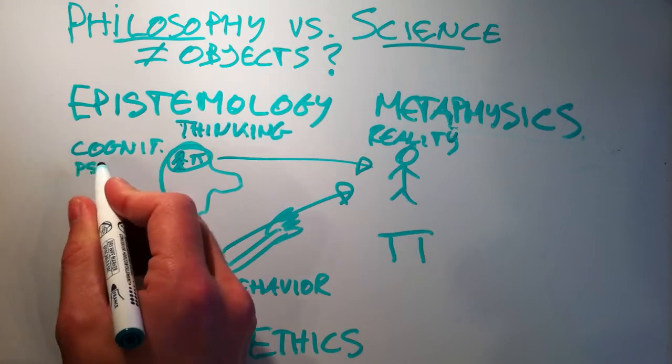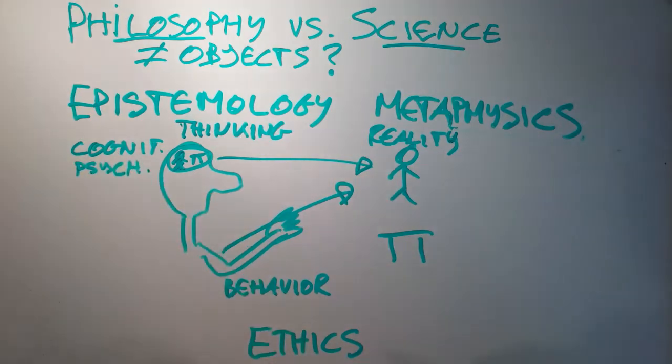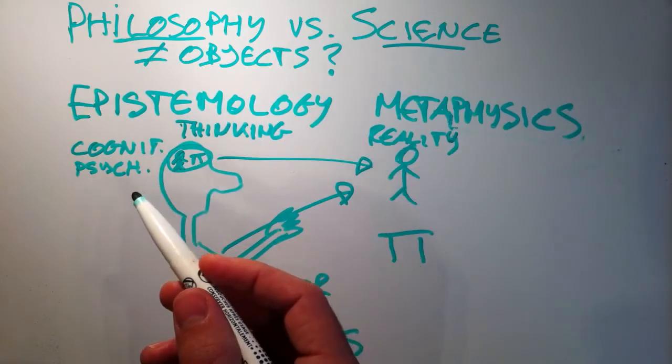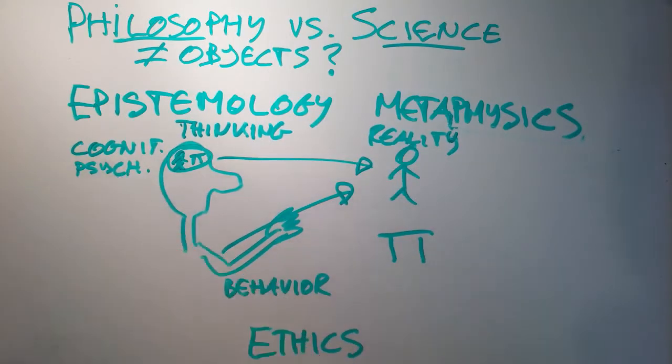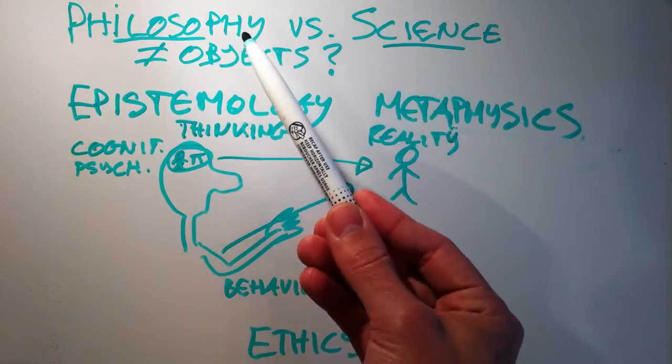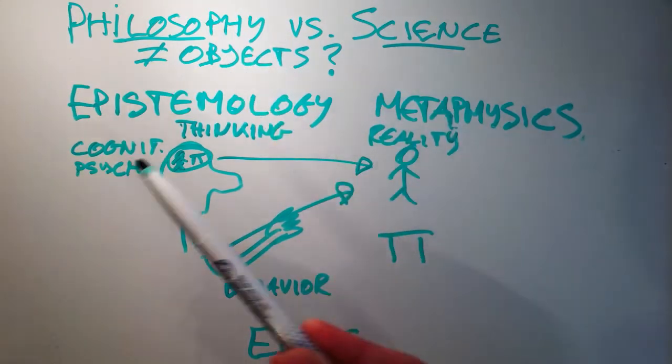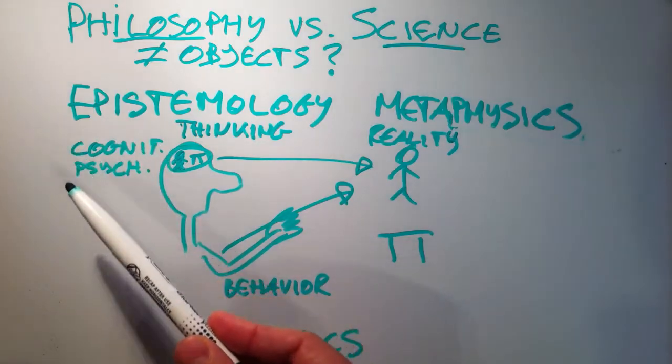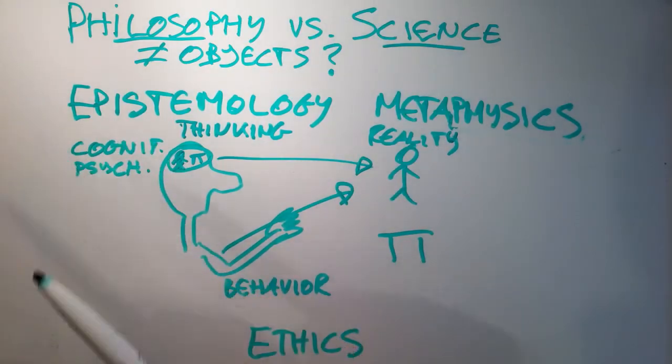So, what is the difference between the philosophical approach here in epistemology and the scientific approach, cognitive psychology? Why do we need this strange discipline of philosophy in addition to those decent sciences which have proved that they are valuable, such as cognitive psychology?